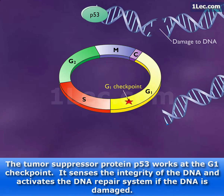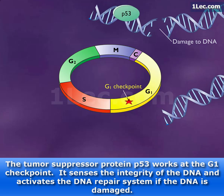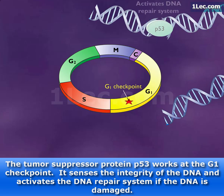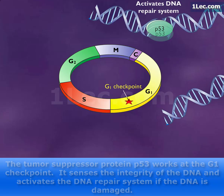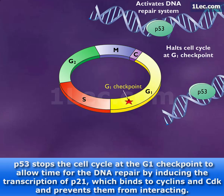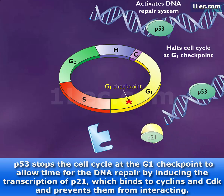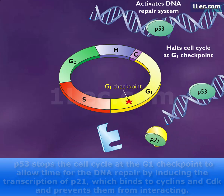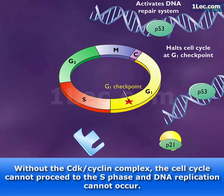The tumor suppressor protein P53 works at the G1 checkpoint. It senses the integrity of the DNA and activates the DNA repair system if the DNA is damaged. P53 stops the cell cycle at the G1 checkpoint to allow time for DNA repair by inducing the transcription of P21, which binds to cyclins and CDK and prevents them from interacting. Without the CDK-cyclin complex, the cell cycle cannot proceed to the S phase and DNA replication cannot occur.